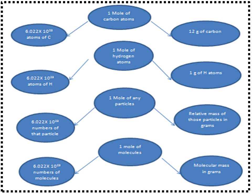From the diagram: one mole of carbon atoms = 6.022 × 10²³ carbon atoms = 12 grams. One mole of hydrogen atoms = 6.022 × 10²³ hydrogen atoms = 1 gram. One mole of any particles = 6.022 × 10²³ particles with their relative mass in grams. One mole of molecules = 6.022 × 10²³ molecules = molecular mass in grams.